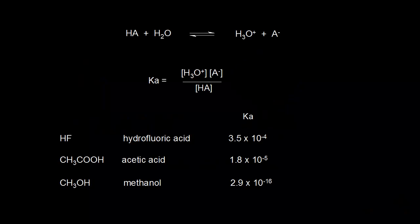We've already talked about how to write an equilibrium expression. So if we have some generic acid HA that donates a proton to H2O, H2O becomes H3O+, and HA turns into the conjugate base, which is A-. Here's our equilibrium expression, and the ionization constant Ka for a weak acid is going to be less than one.